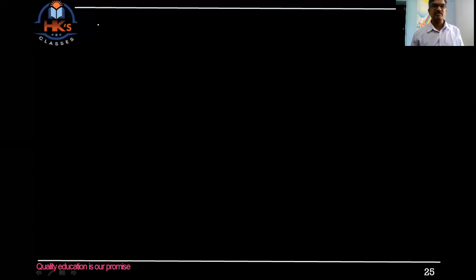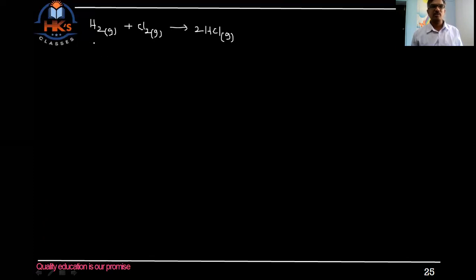Let me take one reaction where hydrogen gas combines with chlorine gas to give HCl. This is a stoichiometric equation because it is completely balanced. As per the stoichiometry, one mole of hydrogen — because the coefficient of H₂ is one — combines with one mole of chlorine to give two moles of HCl.